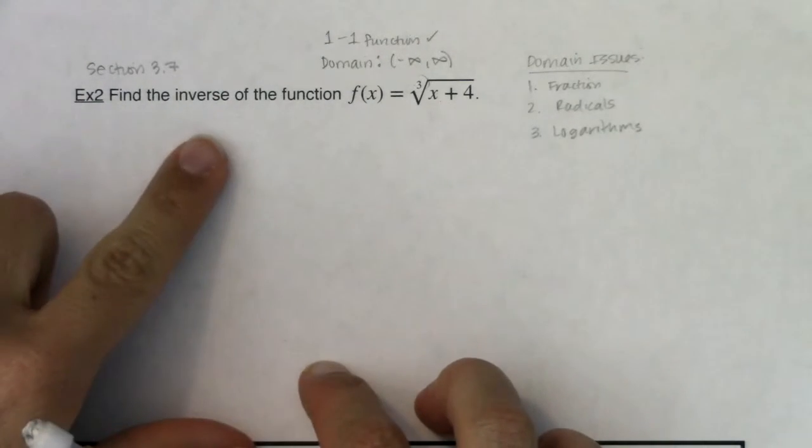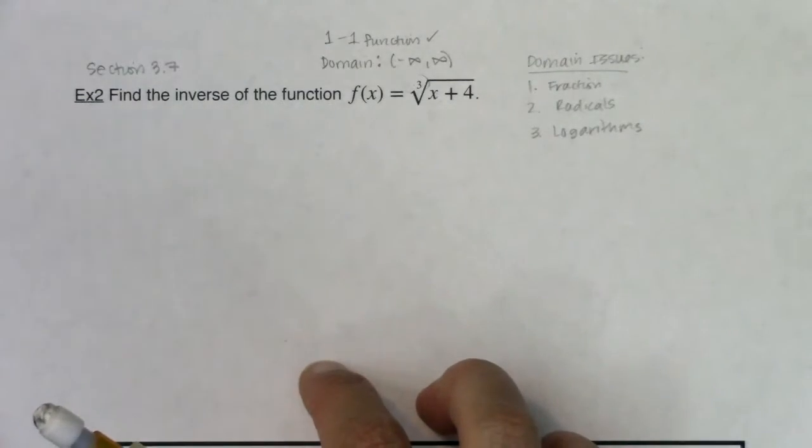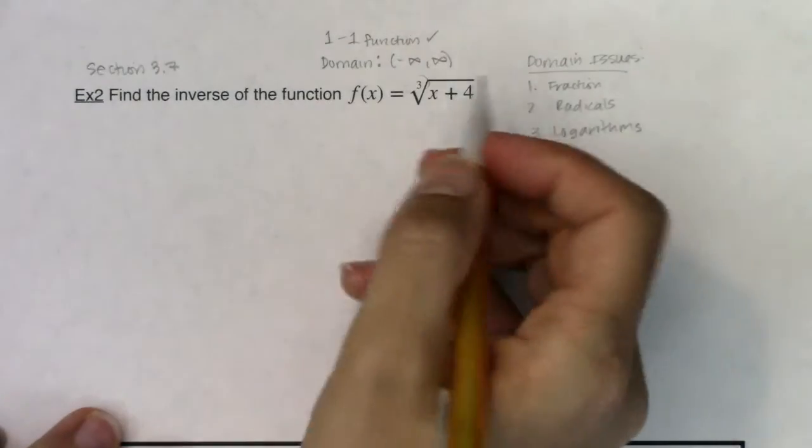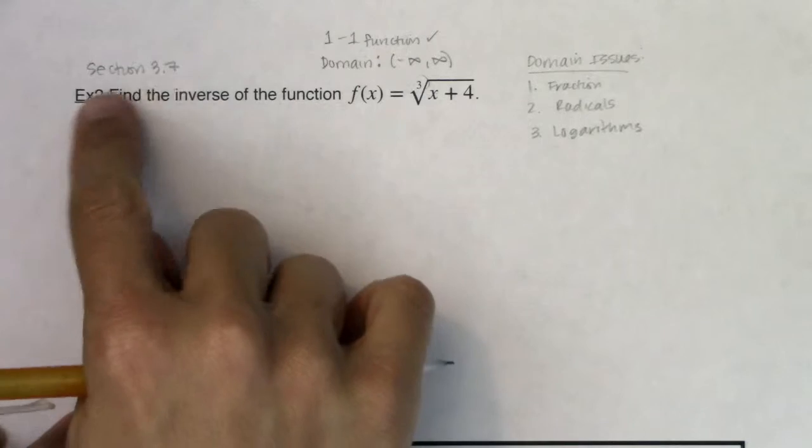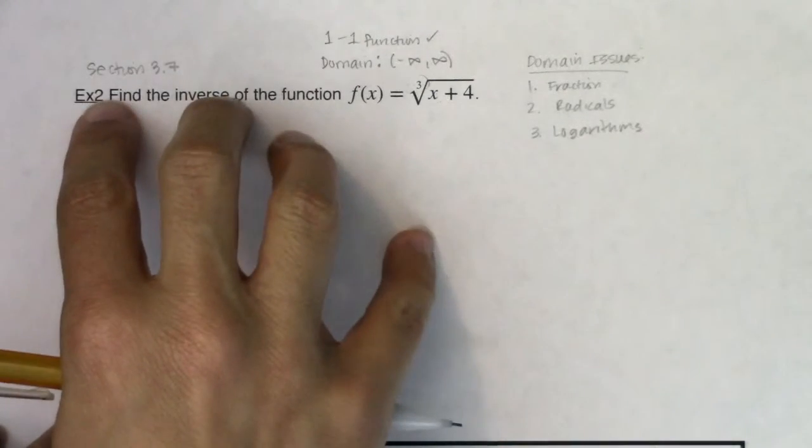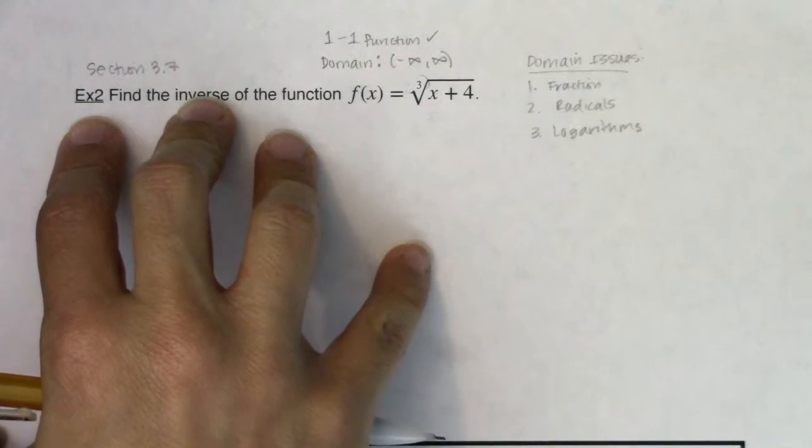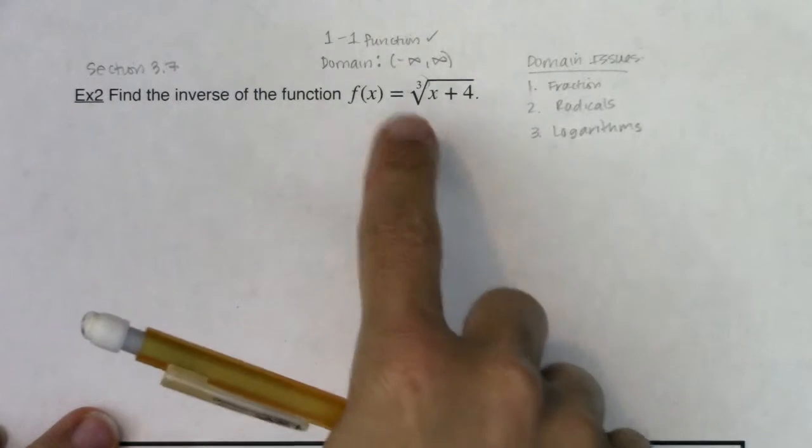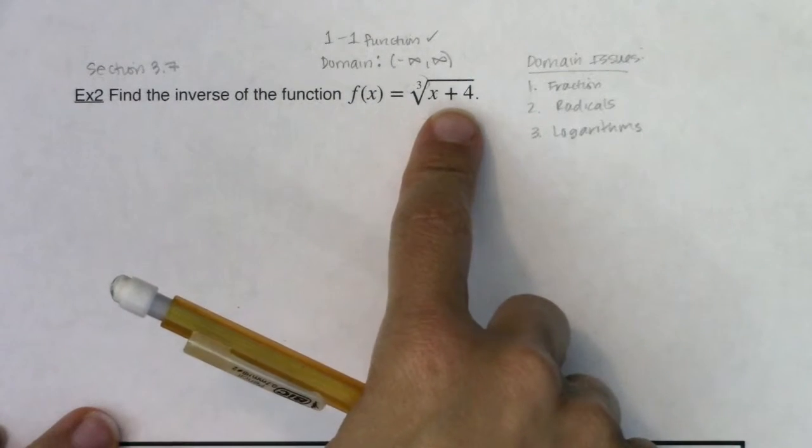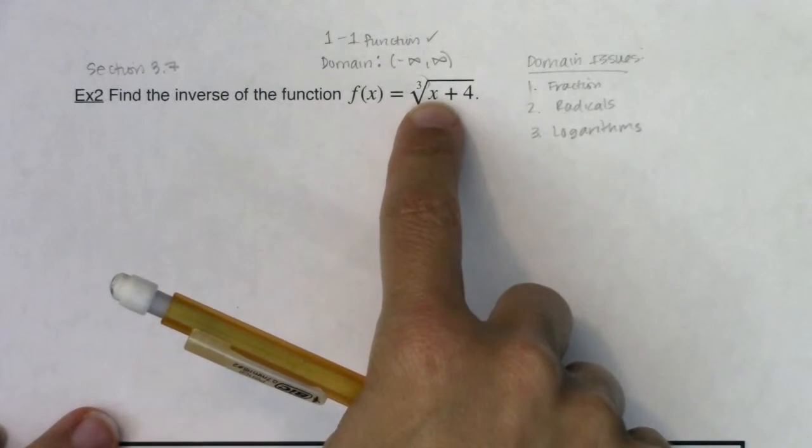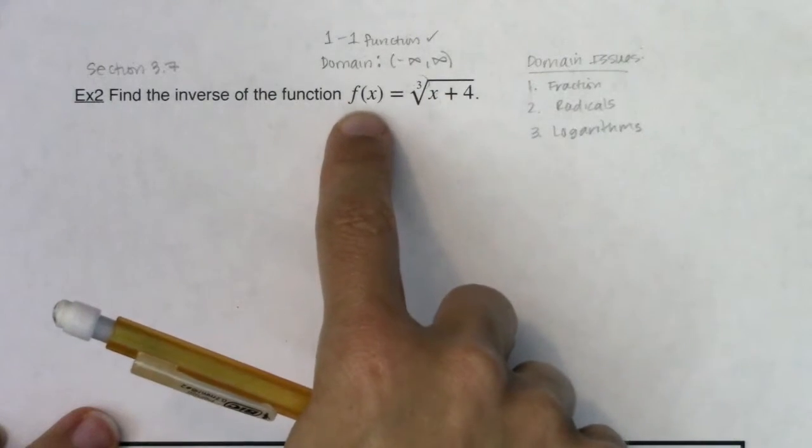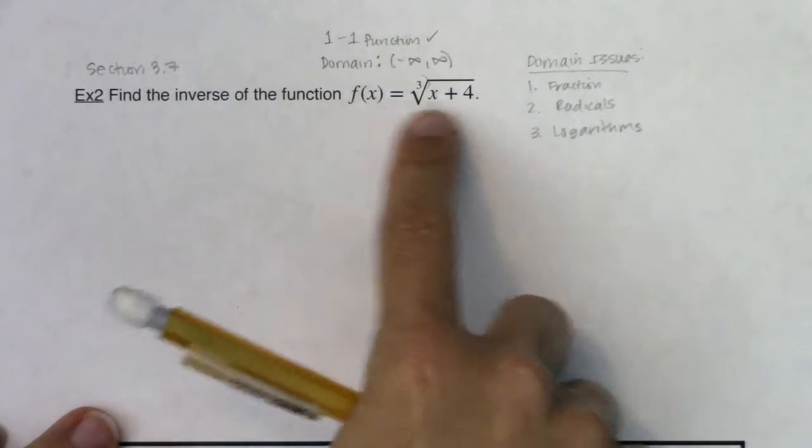That just tells us that the inverse function exists. f inverse of x, this thing that I'm being tasked with finding, it exists. So let's go find it. We talked about how you find the inverse function, or the equation of an inverse function, in section 3.7. The first thing you want to do is interchange x and y. So wherever I see an x, I'm going to write a y, and wherever I see a y, I'm going to write an x.